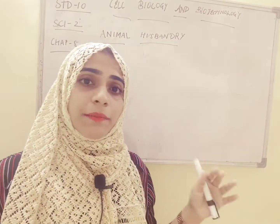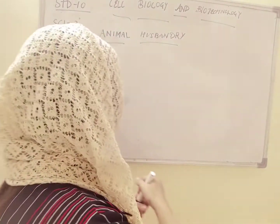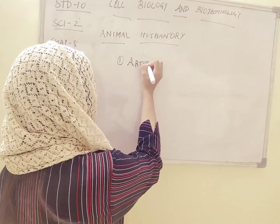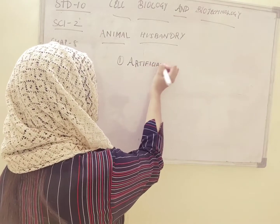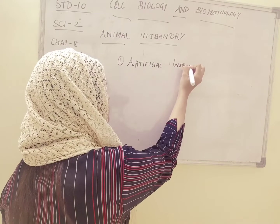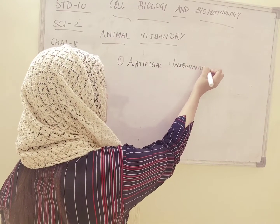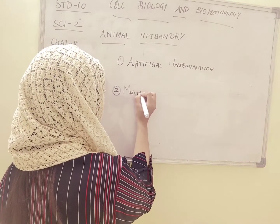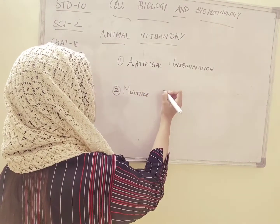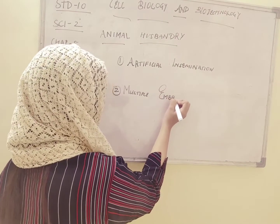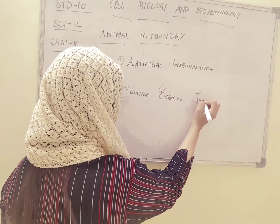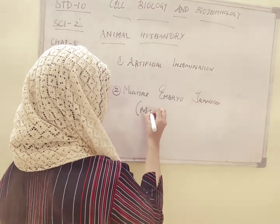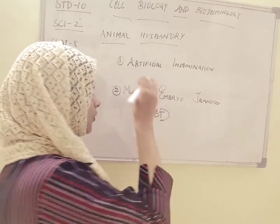So what is the application of biotechnology in animal husbandry? There are two ways in which biotechnology has benefited animal husbandry: the first is artificial insemination, and the second is Multiple Embryo Transfer, written in short form as MOET.